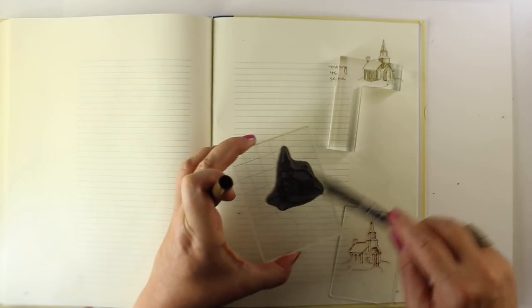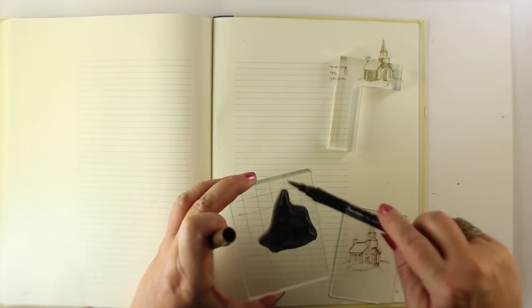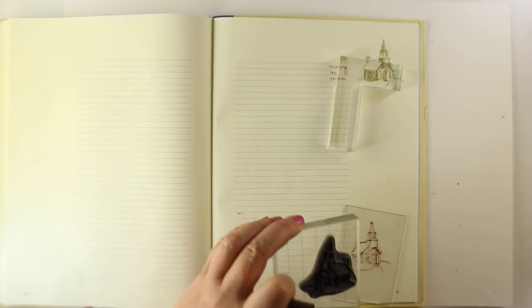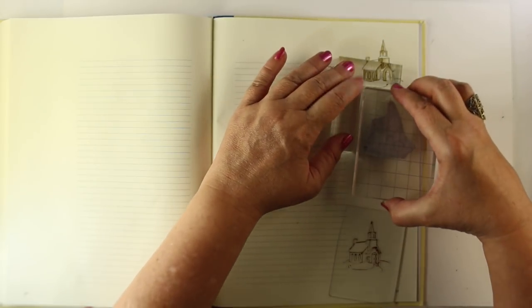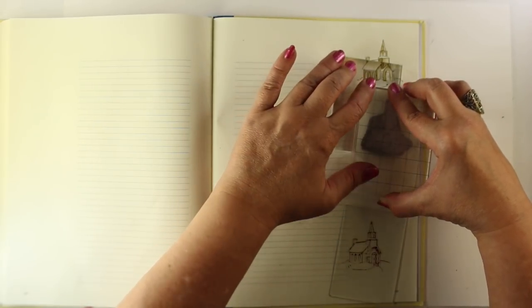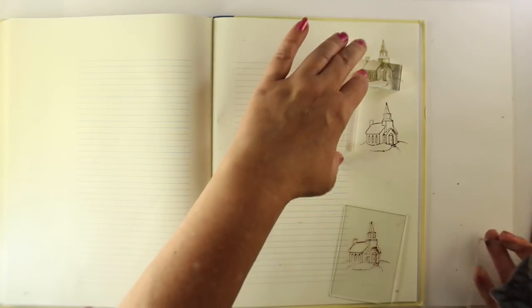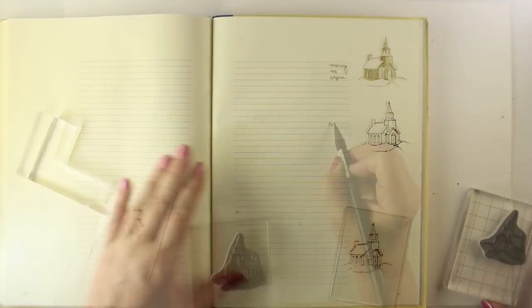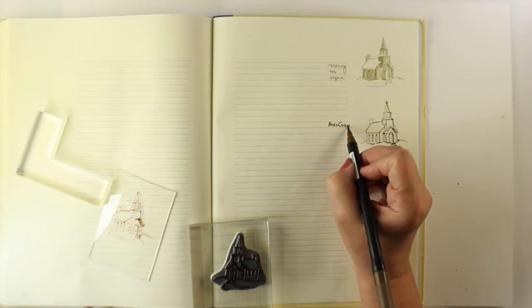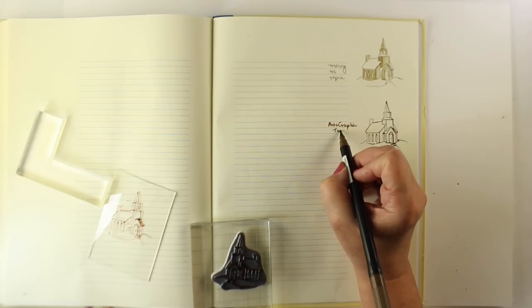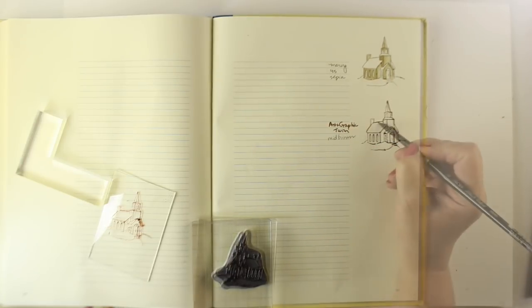And that way then I can take another marker. I'm going to use a different brand of marker. These are called Art and Graphic Twin Markers. And color the stamp with that. Line it up in that L. And then when I stamp it, my church should be straight. And again, I'll write down what color it is. And you can see the difference in the line width on that one. Definitely heavier.